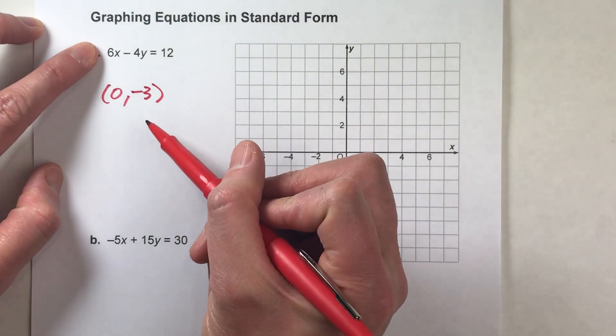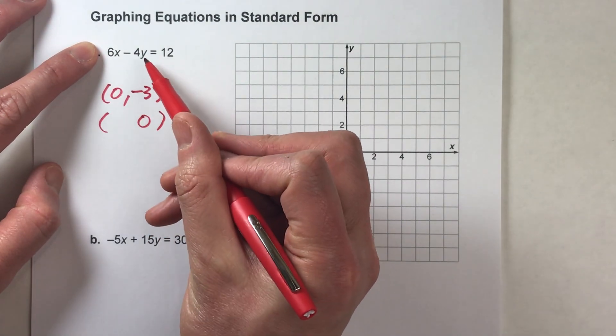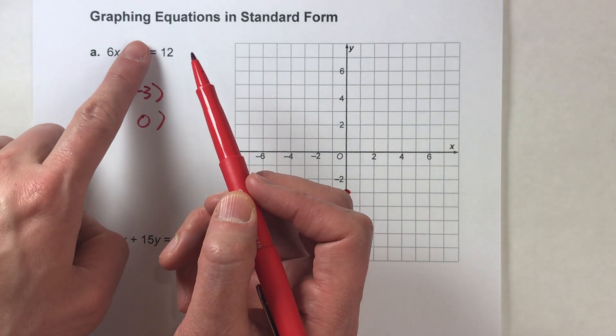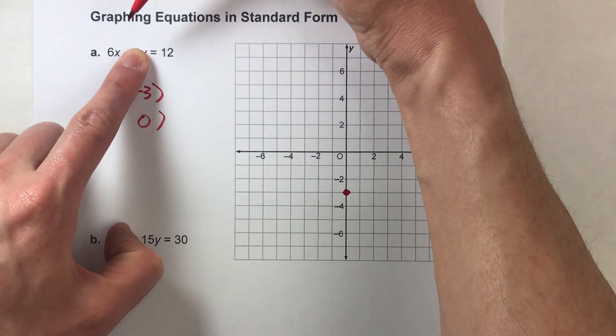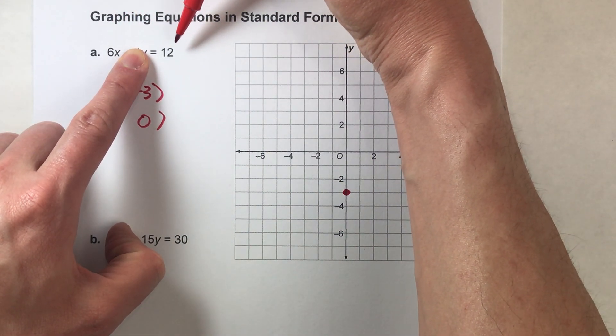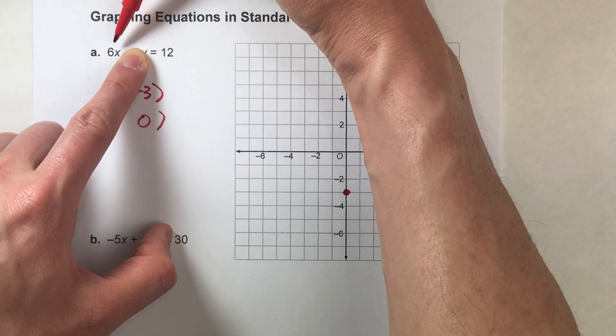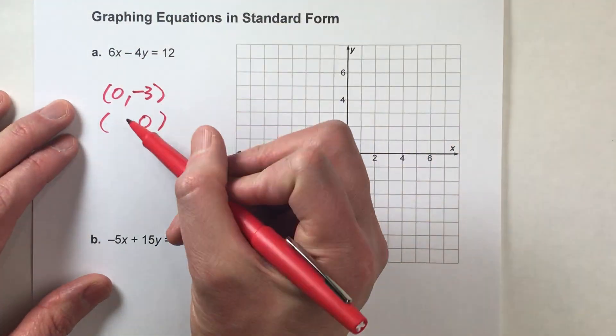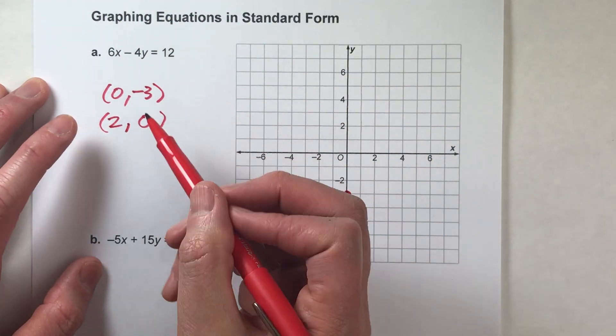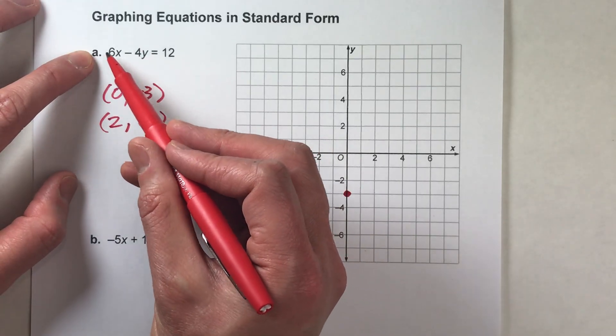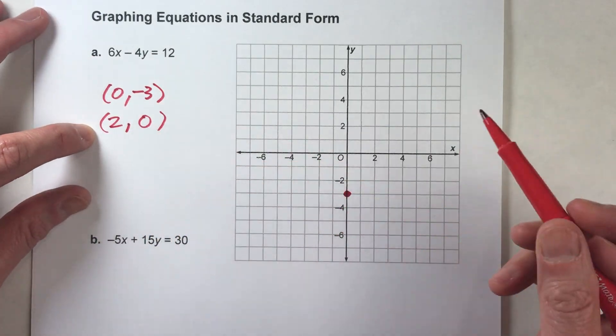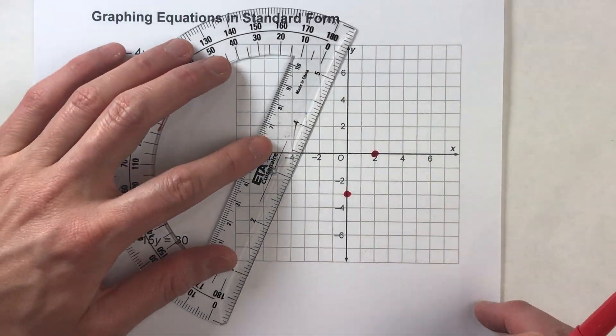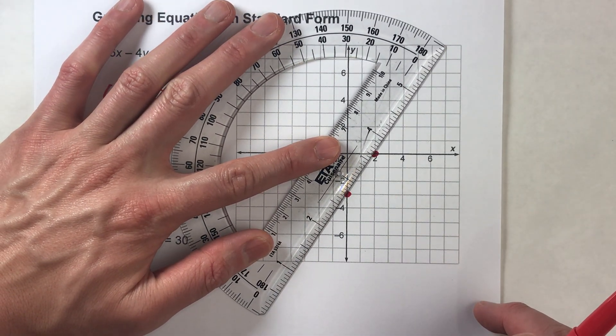Now, let's use the point where y is zero. So if y is zero, negative four times zero is just going to be zero. So we could ignore all that and we're left with six times x is equal to 12. So what would x have to be so that six times x equals 12? X would have to be two because six times two equals 12. So the x value has to be two if y is zero. So yet another combination of x and y that will make this equal to 12, two and zero. So if I plot that, that's right here.